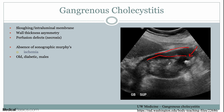This is due to necrosis of the gallbladder wall. A lot of times the patient may not have a sonographic Murphy's sign — if there's so much ischemia that they can't feel anything anymore, that can actually be an indicator of gangrenous cholecystitis, used in conjunction with imaging findings. On boards, think about this in older, male, diabetic patients, as that's the most common population.